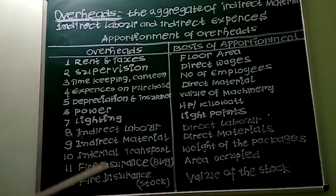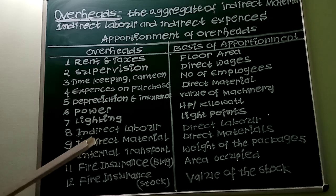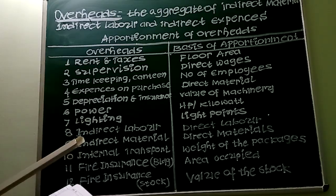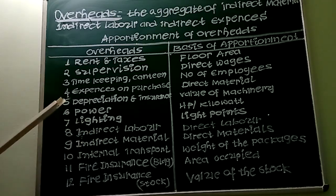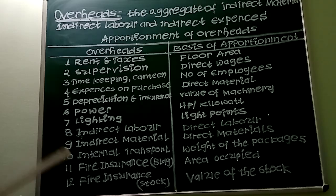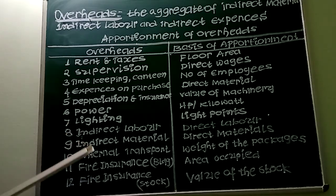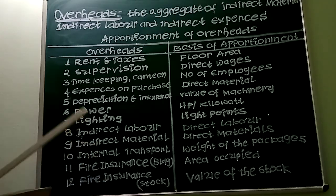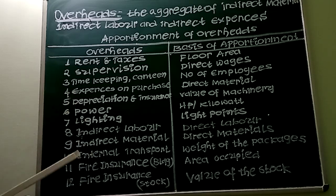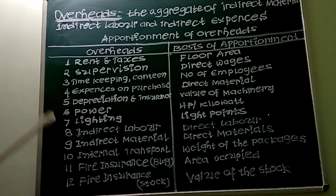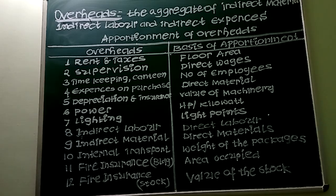Overheads can be classified on the basis of elements, function, behaviour, and controllability. Now let us try to understand the basis for apportionment of overheads.